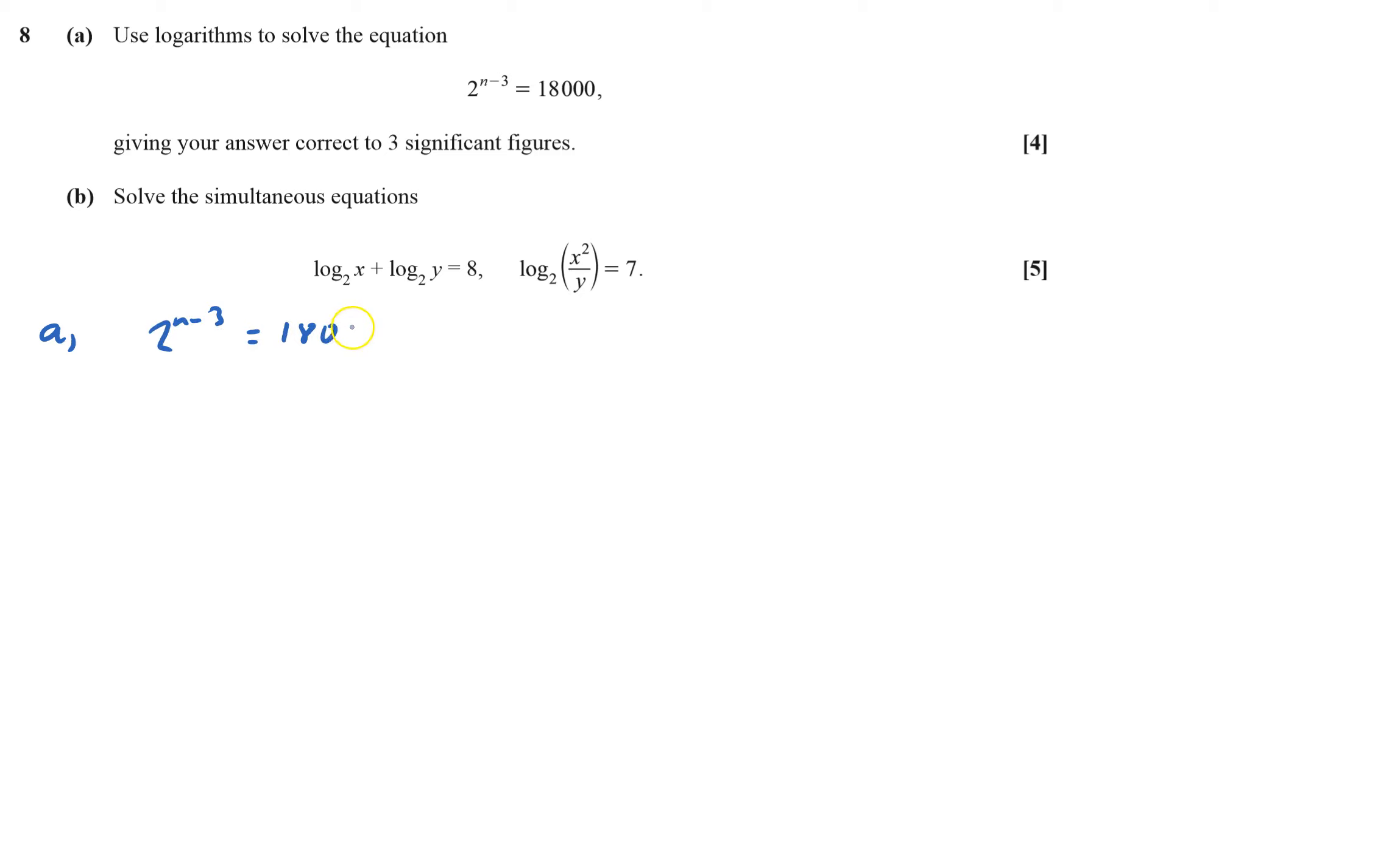It says use logarithms, but we'll have to anyhow to sort of bring the n minus 3 down. So I'm going to log both sides, and I like writing it down both sides, log 18,000, and that is actually log to base 10, but you don't have to put that in if you're dealing in log to base 10. It's just assumed.